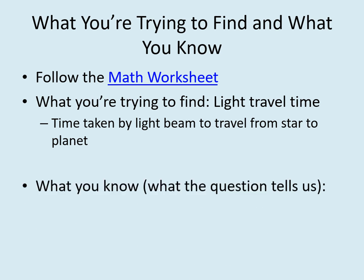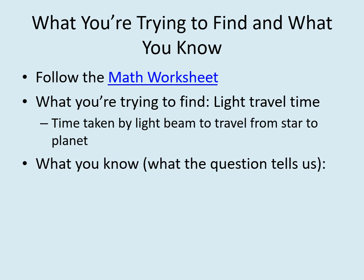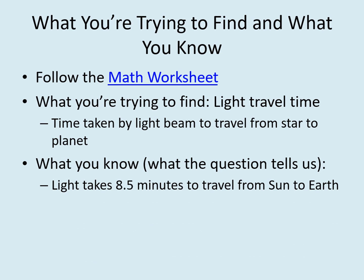The 'what you know' part is also based on what's in the question. Here is where you put in any important values the question tells you that could help you solve the problem. In this case, none of the numbers you need for the calculation are in the question, but there is one thing that could be helpful for your prediction: the fact that light takes 8.5 minutes to travel from the sun to the earth. So you should write that down in this box.